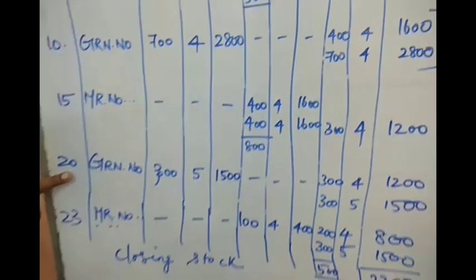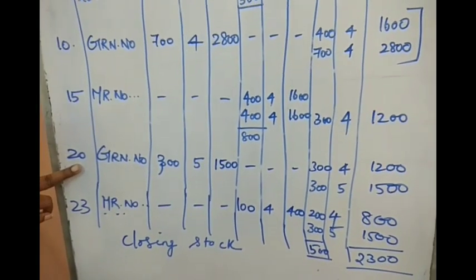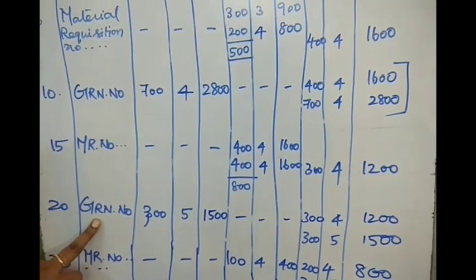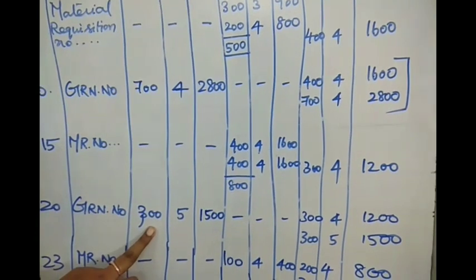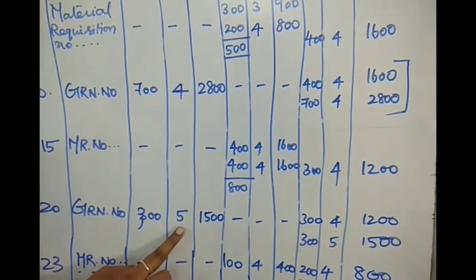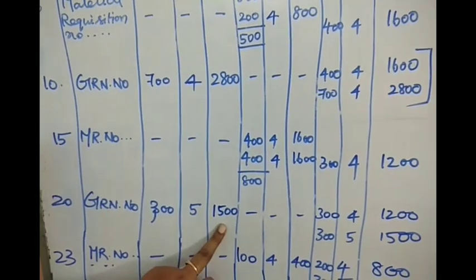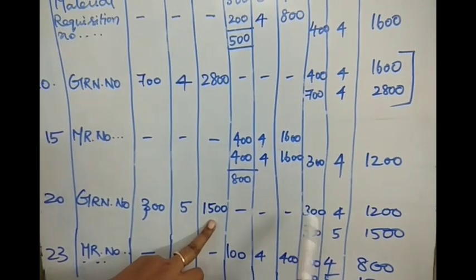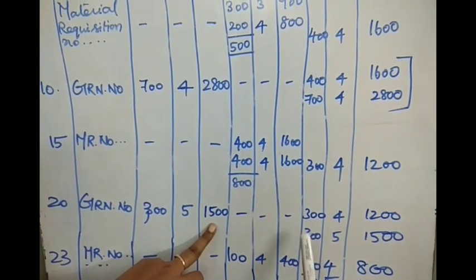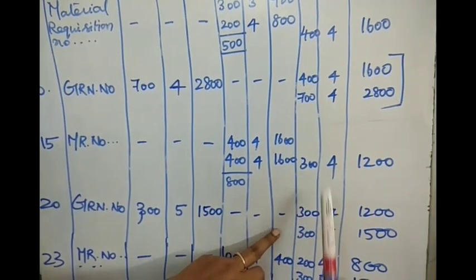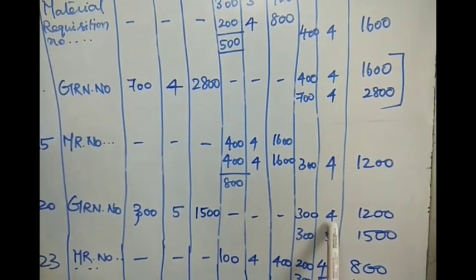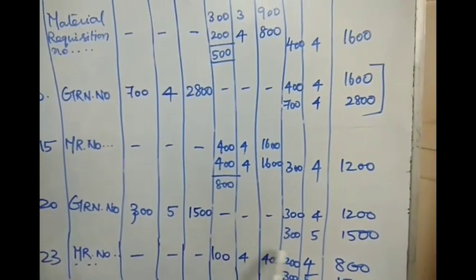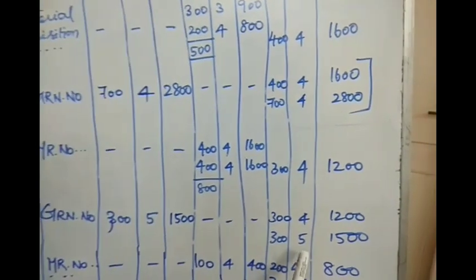On January 20th, there is another purchase: 300 units at ₹5 per unit, ₹1500. I am keeping all transactions recorded separately. The previous balance: 300 units at ₹4 per unit, ₹1200. The current transaction: 300 units at ₹5 per unit, ₹1500.